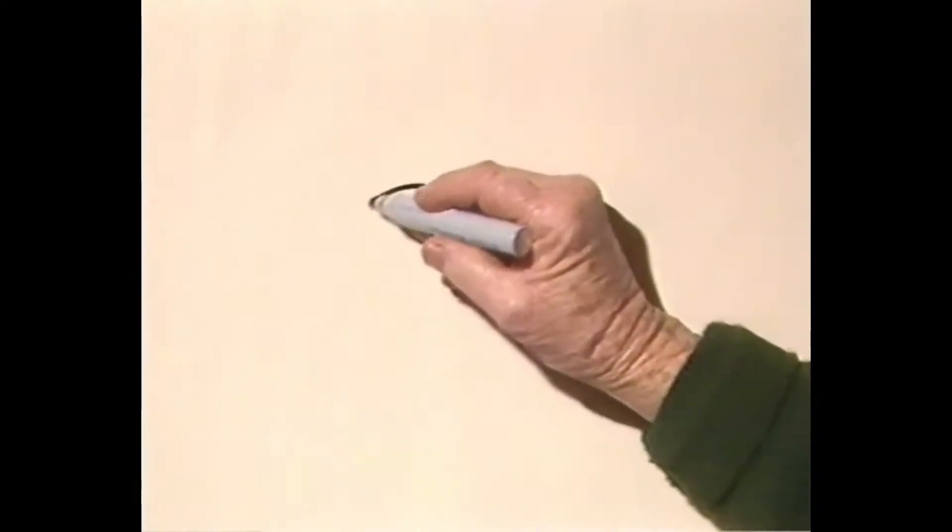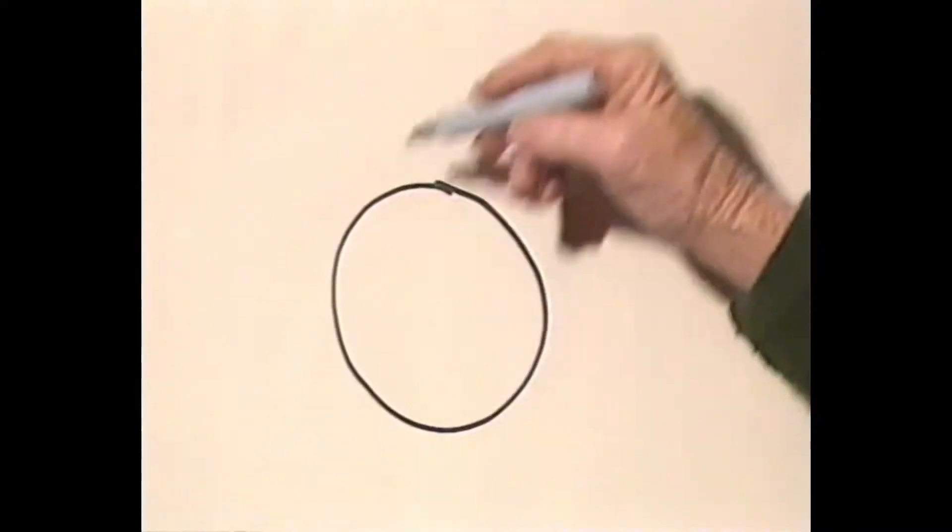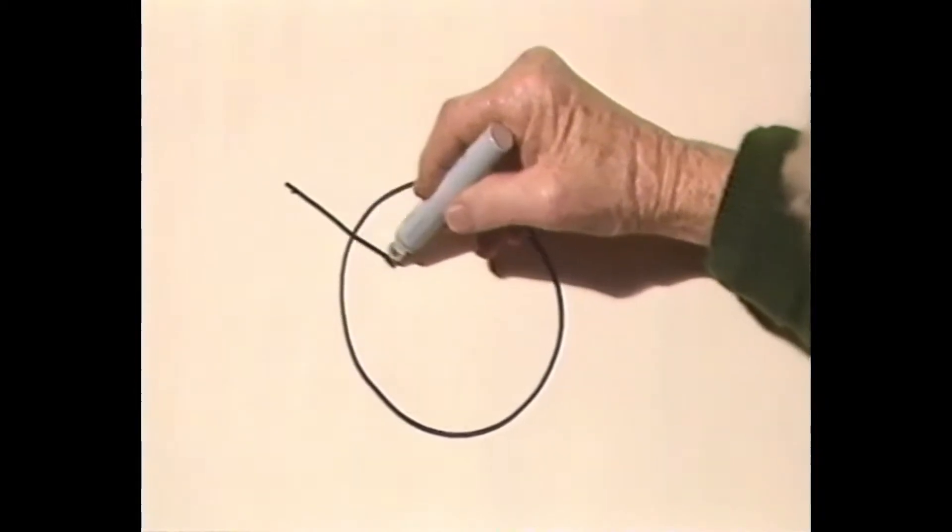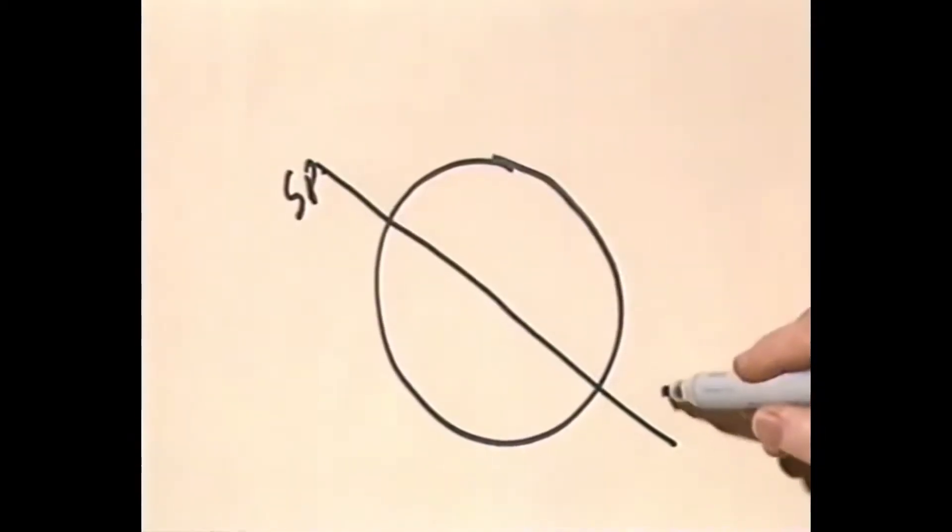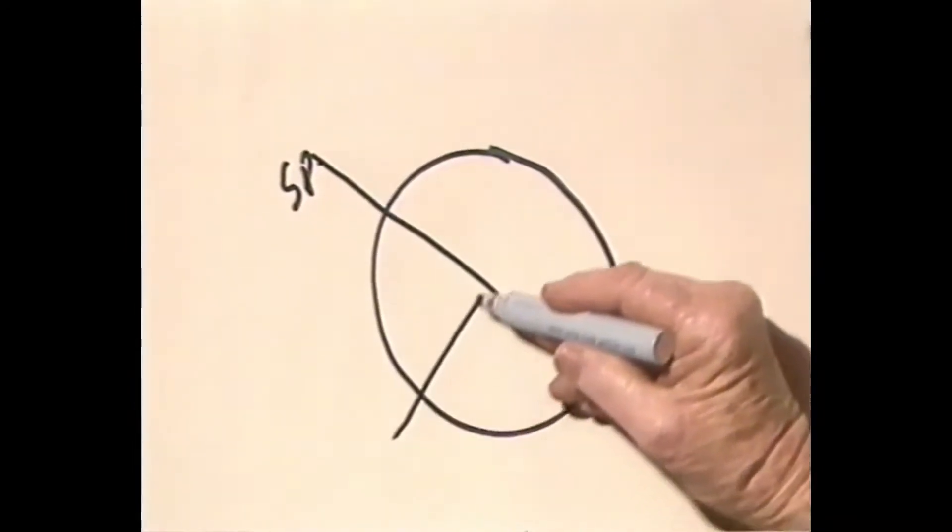Here is the globe of the world. We're on the world somewhere wanting to find out where we are. The world spins on an axis - south pole, north pole. Right angles to the axis is the equator.